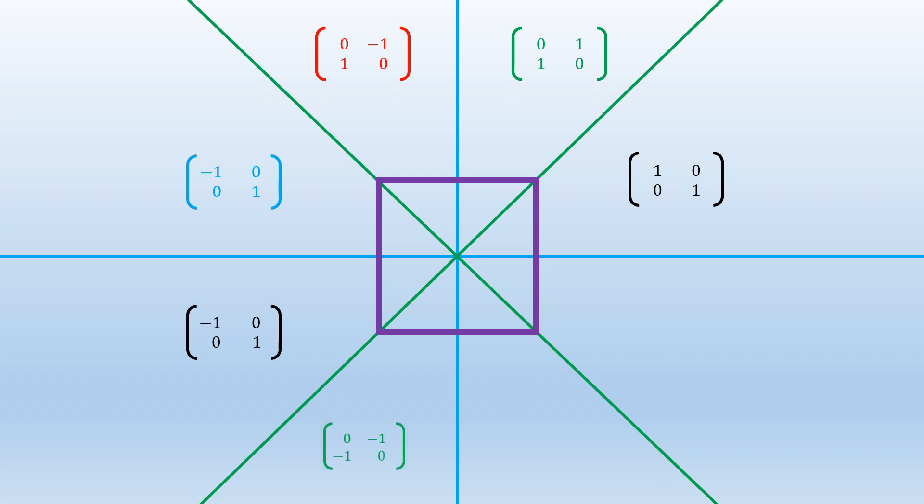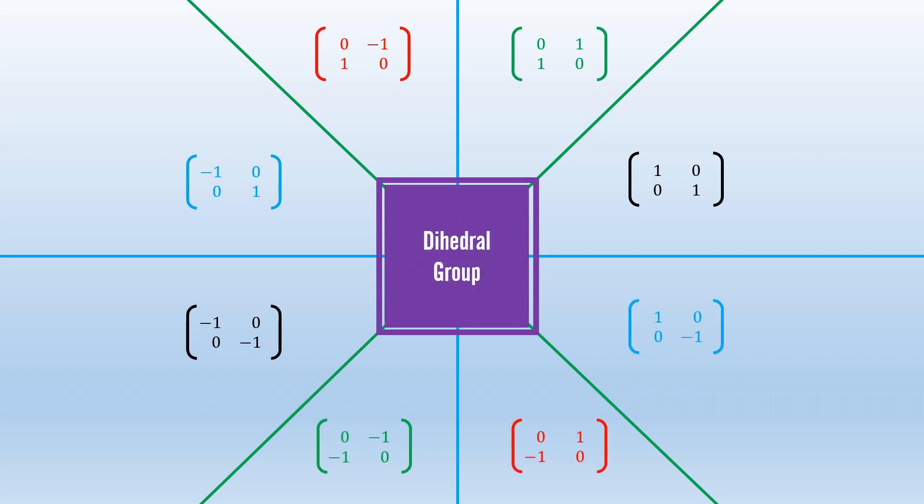For your 90 degree rotation counterclockwise, you use the matrix 0, negative 1, 1, 0. And to go the other direction, you switch the position of the negative sign. So now we have quantified every single symmetry of a square using a 2x2 matrix. This group of symmetries is called the dihedral group of the square, and the matrices are the matrix representation of this group.